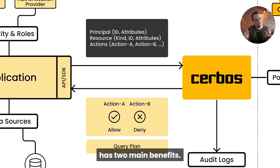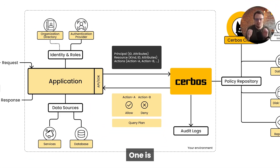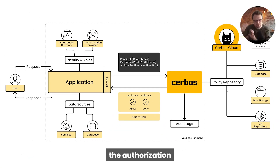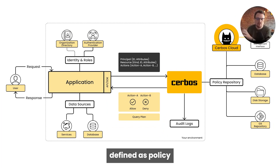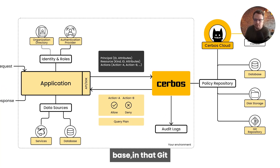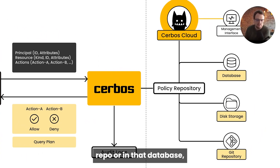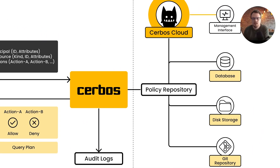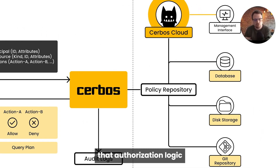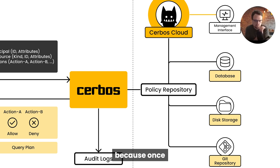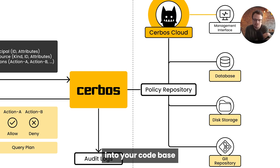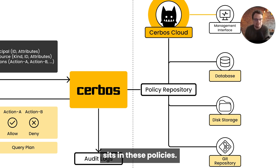This architecture has two main benefits. One is because all the authorization logic is abstracted out and now defined as policy rather than code, which exists outside of your code base in that Git repo or in that database, you can now evolve and change that authorization logic without having to touch your application code again. Because once that API or that SDK is integrated into your code base and all the attributes being passed over, all the logic now sits in these policies.